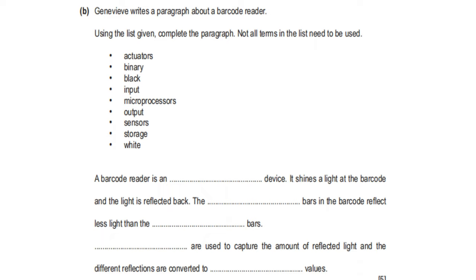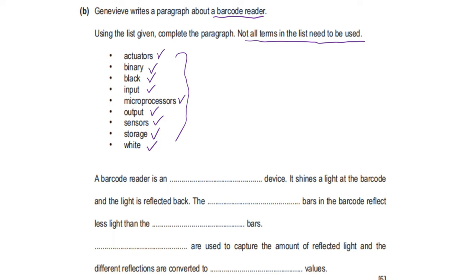Genevieve writes a paragraph about a barcode reader. Using the list given, complete the paragraph — not all terms need to be used. The terms are: actuators, binary, black, input, microprocessor, output, sensor, storage, and white. A barcode reader is an input device.